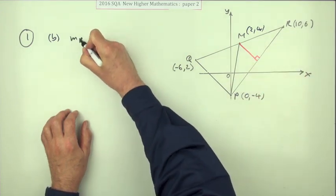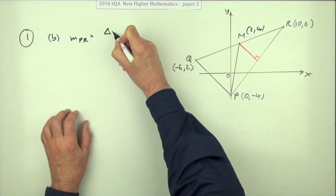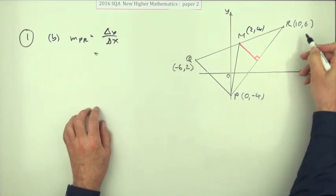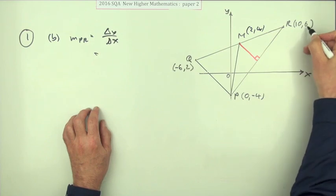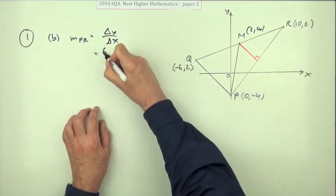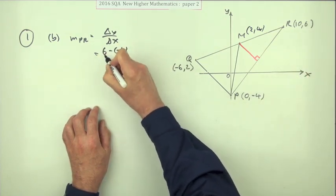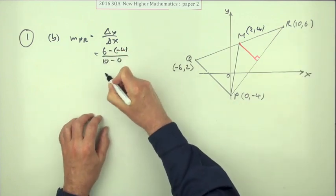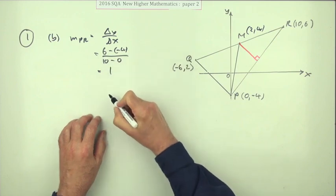So I'll need the gradient of PR. That'll be the difference in the Y coordinates over the difference in the X coordinates. It's easier when you've got it written out like this. So that's difference in the Y, 6 take away negative 4, maybe I will just spell it out, over difference in the X is 10 take away 0. So that's 10 over 10, which very nicely is 1.